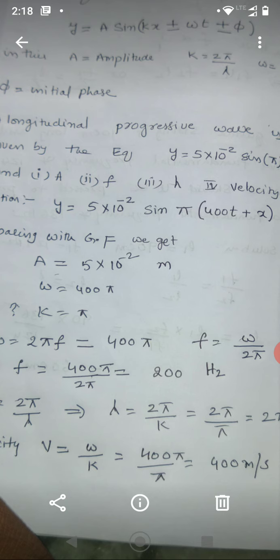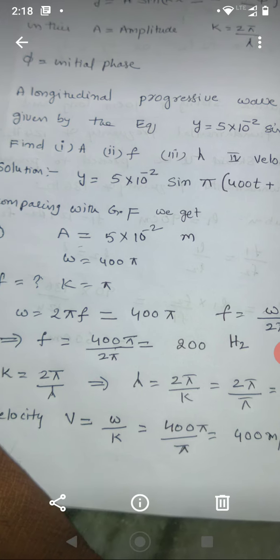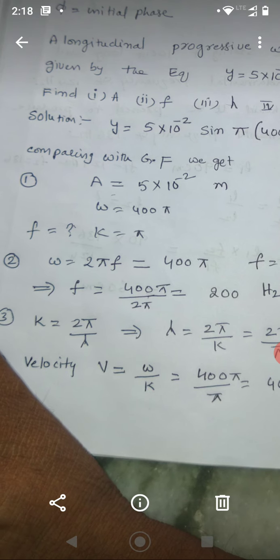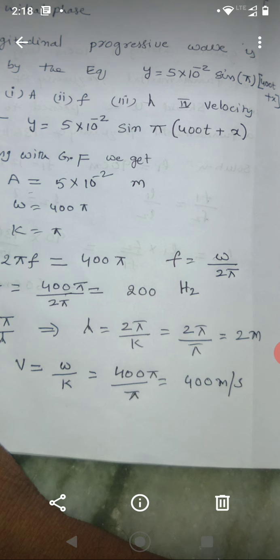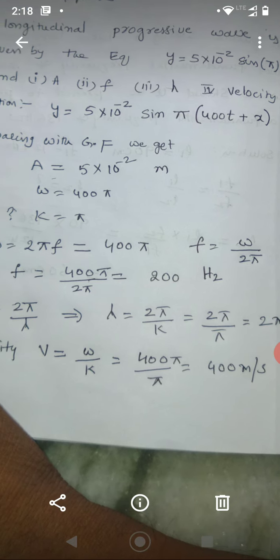And k. K is coefficient of x. K is equal to pi. Now see, A is coming directly. Now we want to find the second one, frequency. You know the relation between frequency and omega. Omega equals 2 pi f. So, 2 pi f equals 400 pi. So, f becomes 400 pi by 2 pi, 200 hertz.